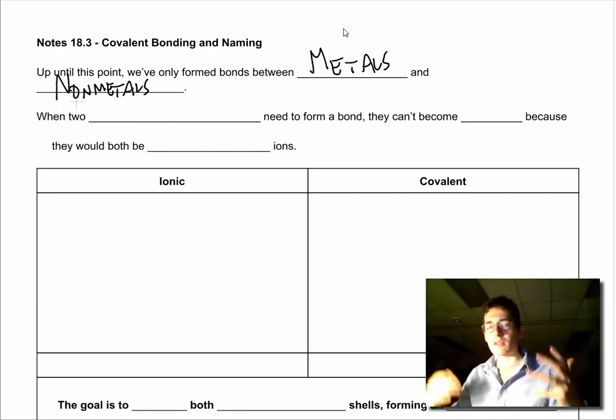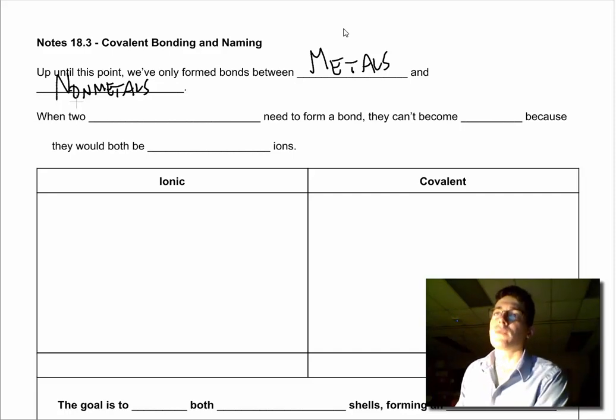Metals are things like sodium, potassium, lithium, and the transition metals. Non-metals are the gases that we use a lot in our bonding. These create cations and anions.